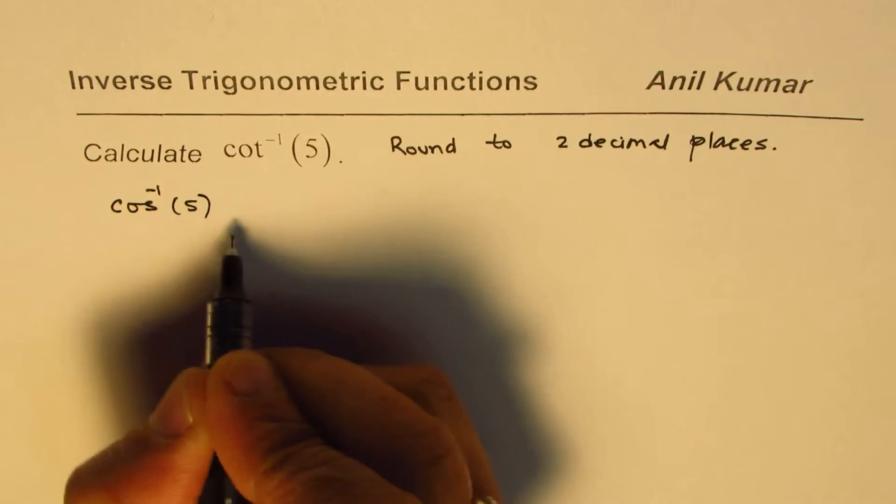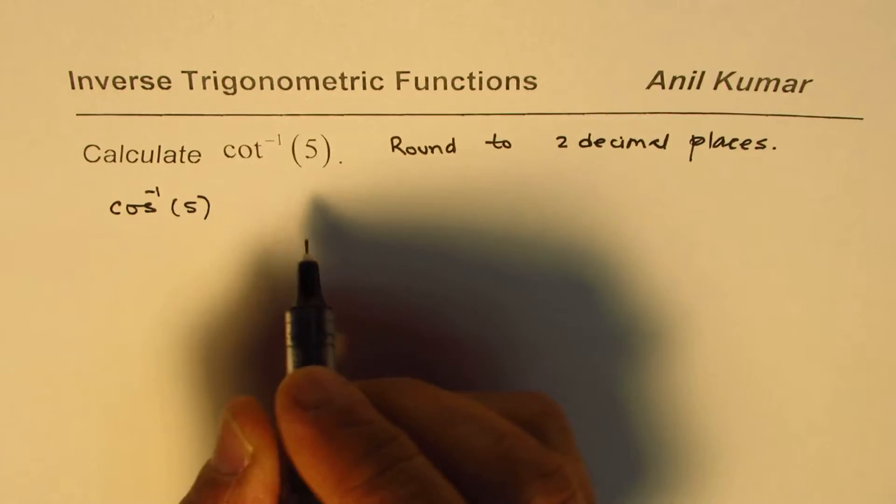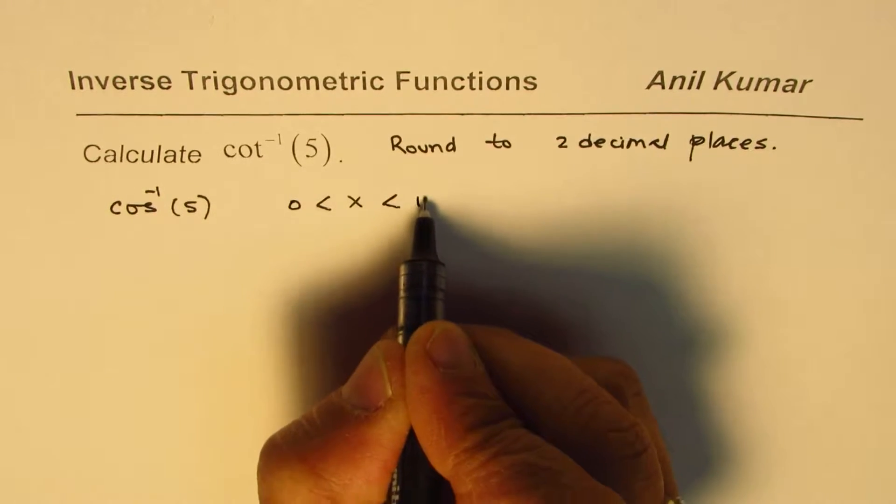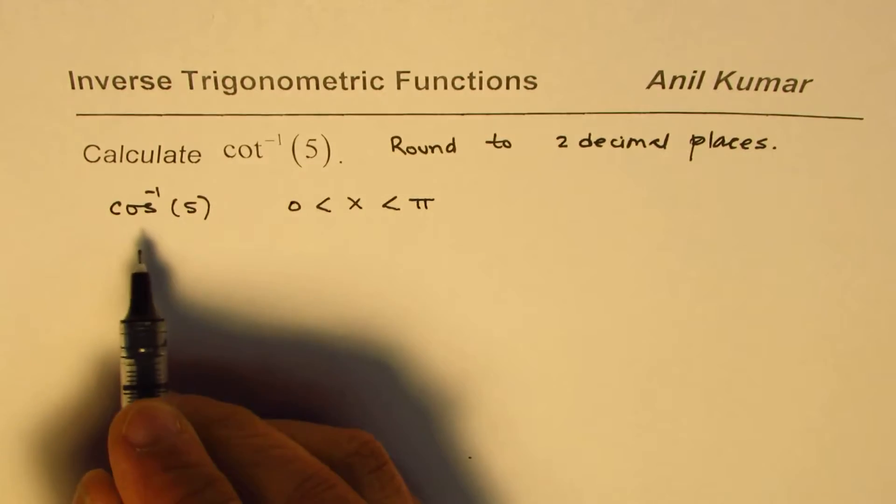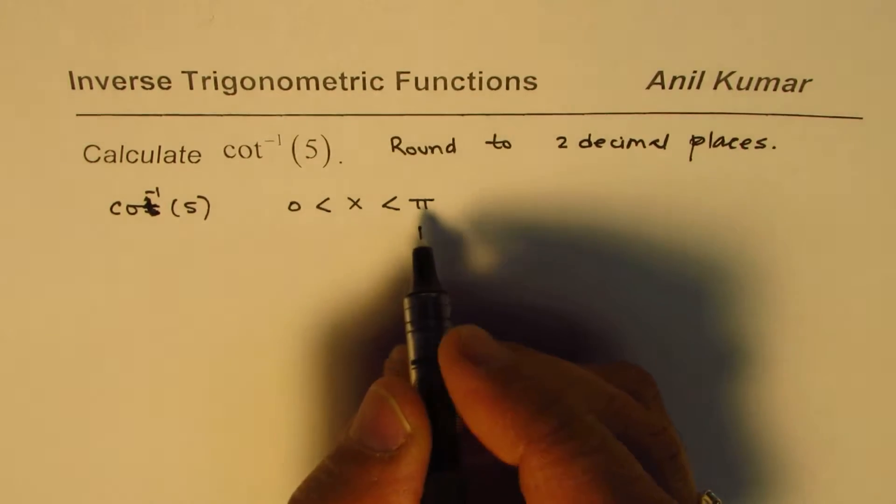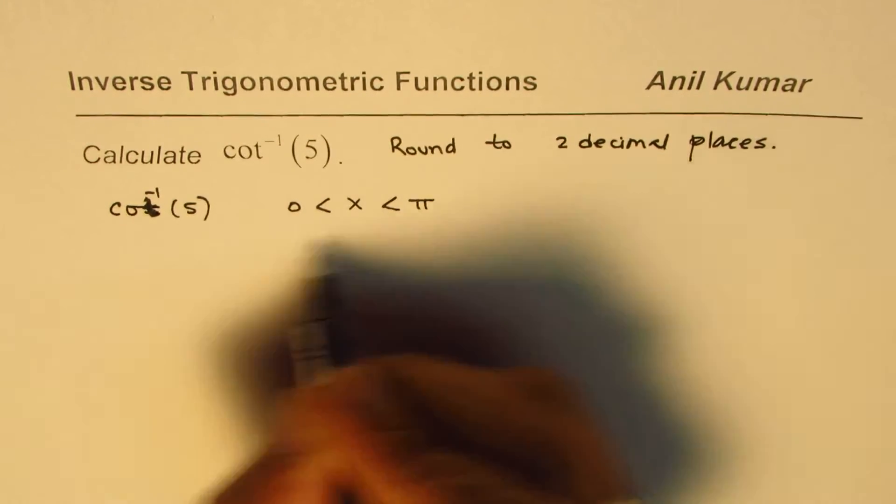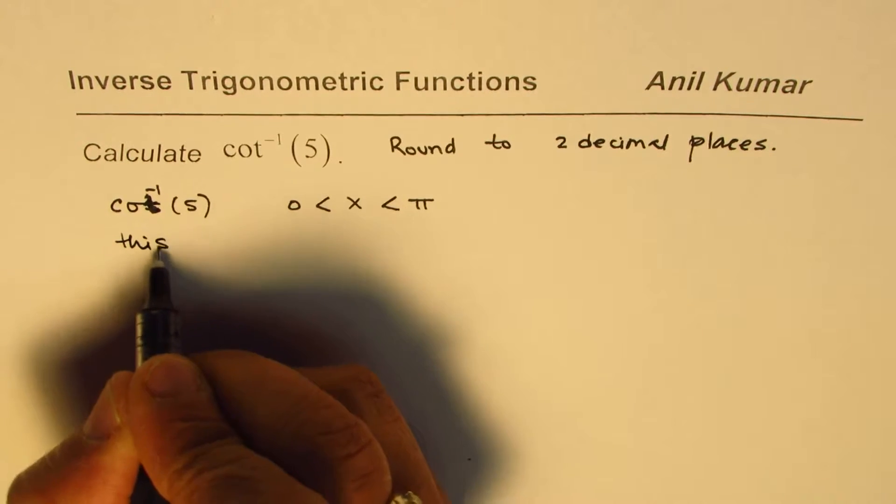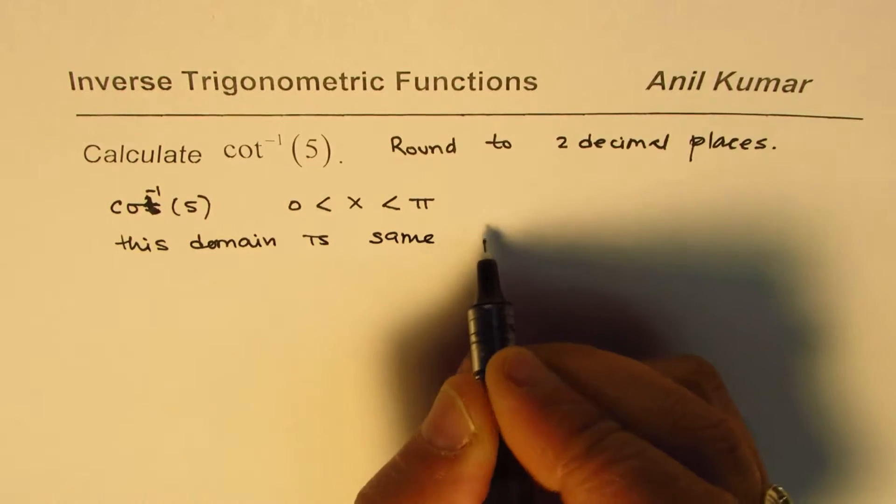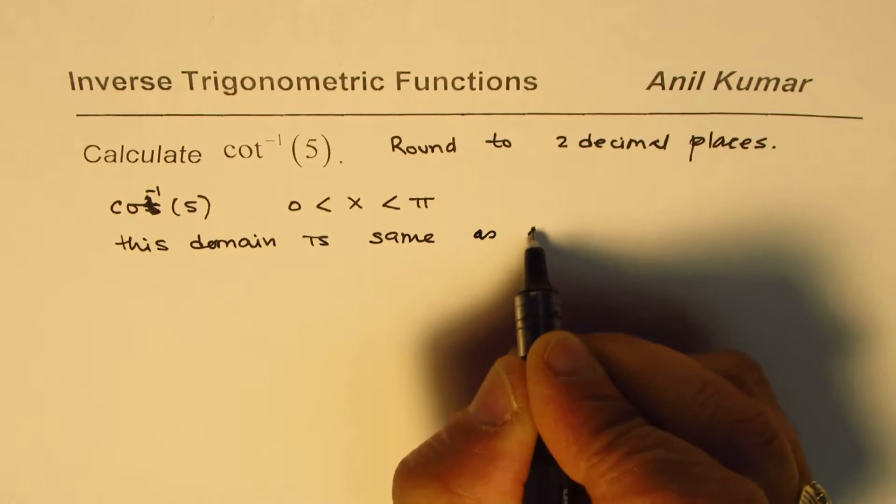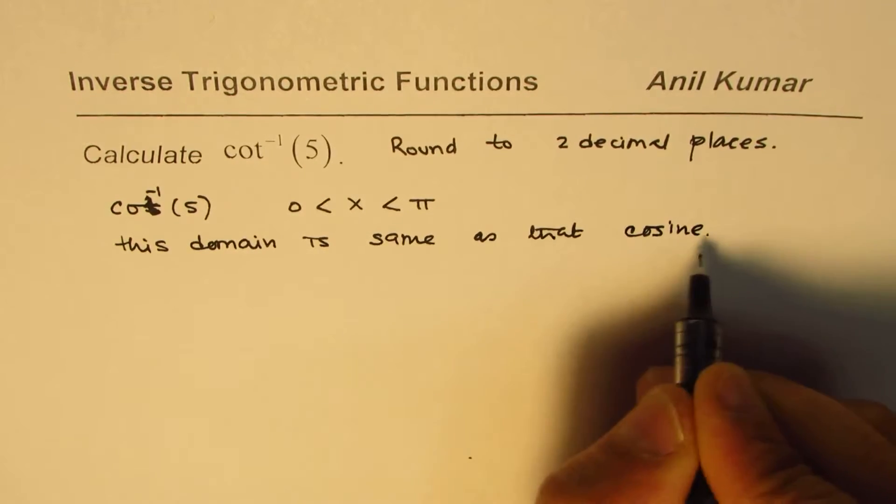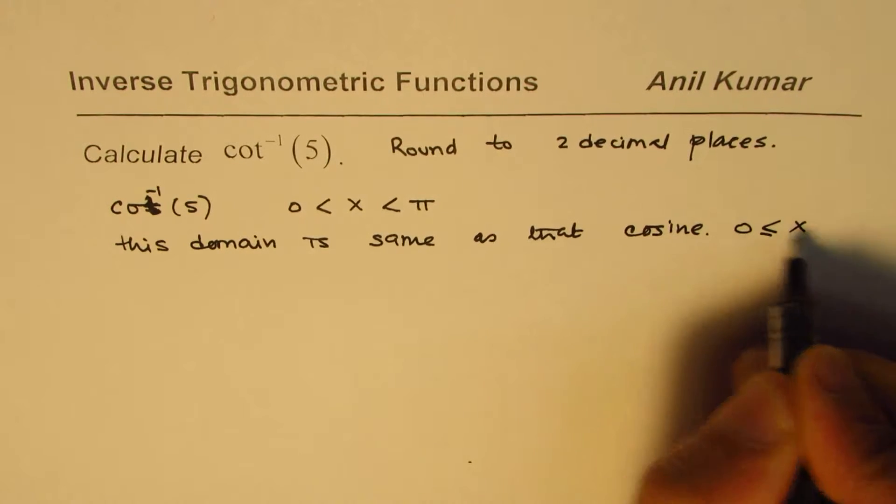When you're talking about cot⁻¹ of 5, we are looking at the domain where x should be between 0 and π. That is the domain in which cot⁻¹ is defined. This domain is the same as that of the cosine function.